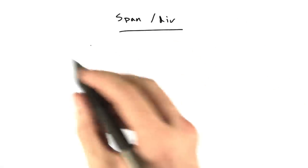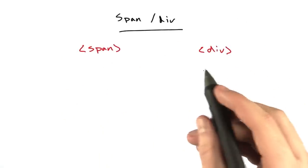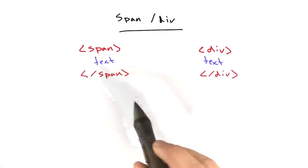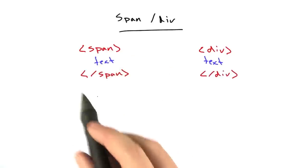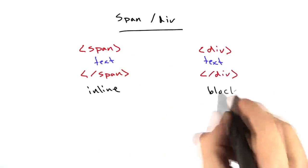Two more elements I'd like to teach you. These are called span and div. Span and div are both normal elements. They can both have content, and the only difference between these two is span is inline and div is block.